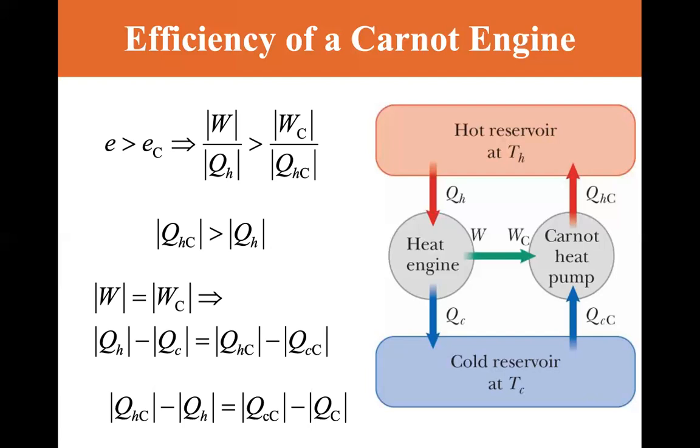Now, let's look at this. Because up here, we see that the absolute value of Q-hot Carnot is greater than Q-hot. This side must be positive, which means that this side must be positive also. So we can see that the net energy exchange with the hot reservoir is equal to the net energy exchange with the cold reservoir. As a result, for the combination of the heat engine and the heat pump, energy is transferring from the cold reservoir to the hot reservoir by heat with no input of energy by work from the surroundings. This result is in violation of the Clausius statement of the second law. Therefore, the original assumption that E is greater than EC is incorrect.